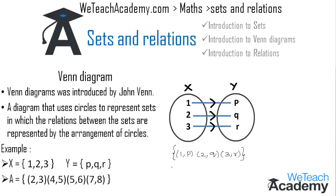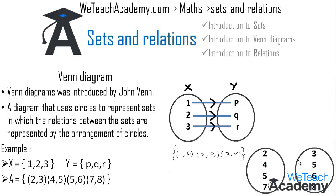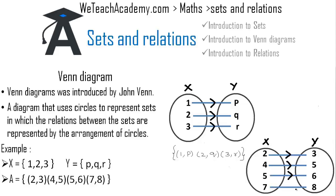In the next example, we have a set of ordered pairs: A = {(2,3), (4,5), (5,6), (7,8)}. We represent this in a Venn diagram by writing the first element of each ordered pair in one diagram (set X) and the second elements in another diagram (set Y). Mapping: 2→3, 4→5, 5→6, 7→8. So set X = {2, 4, 5, 7} and set Y = {3, 5, 6, 8}.